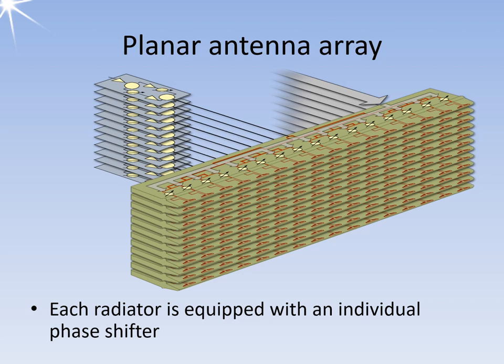Modern multifunctional radars use a planar array, which consists of multiple radiators with independently controllable phase shifters. This design enables the antenna pattern to be adjusted accurately at any bearing in elevation angle, eliminating the need for antenna rotation.